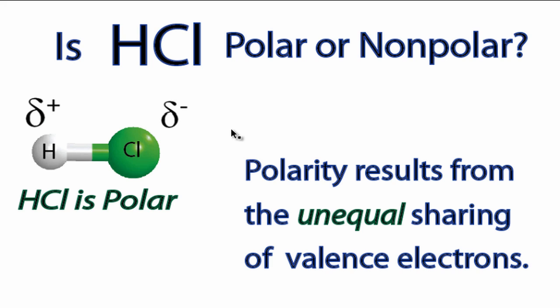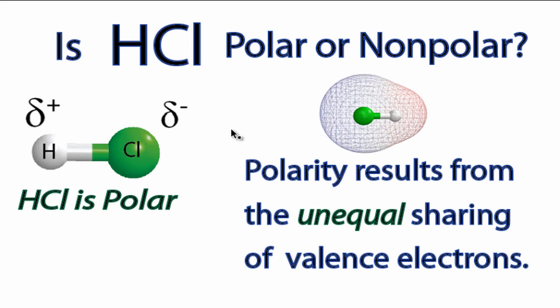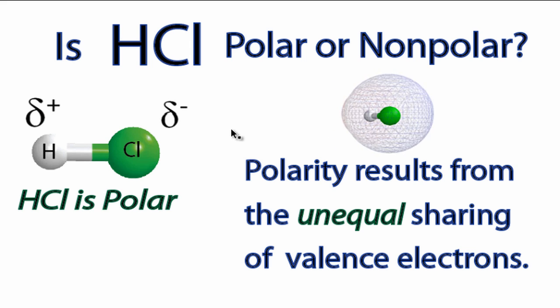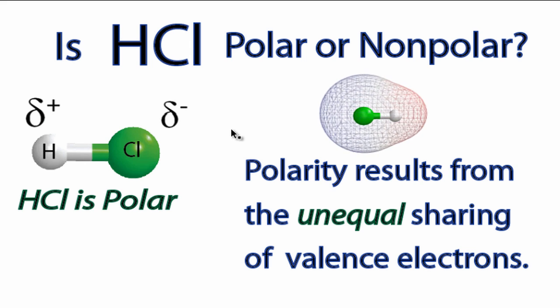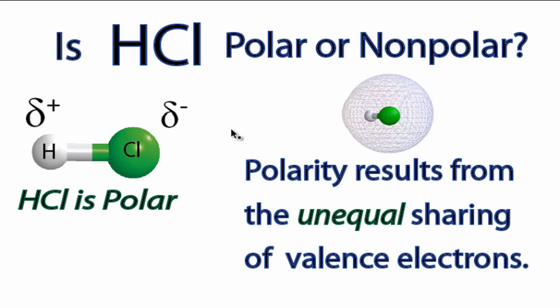We can also visualize that as a cloud of electrons around the hydrogen and the chlorine molecule. And the valence electrons, those shared electrons, will spend more time around the chlorine. So that would be represented above with the blue. And then the red would be the more positive around the hydrogen.